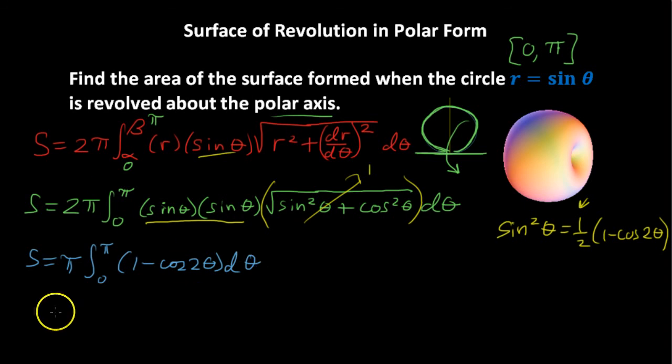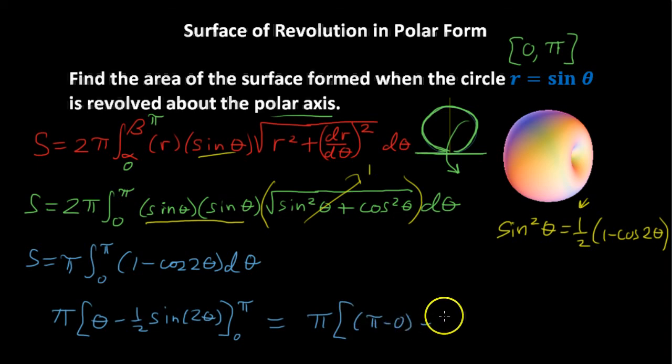Now, the integral of that is, we'll have the pi out here, times theta minus 1 half sine of 2 theta, evaluated from 0 to pi, and that equals, we've got pi out here, multiplied by pi minus 0 minus 0.